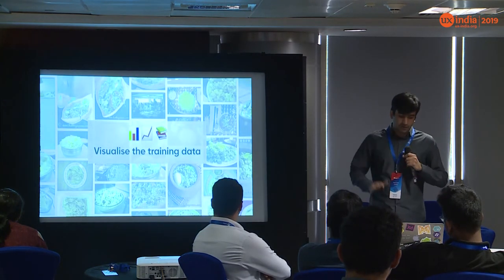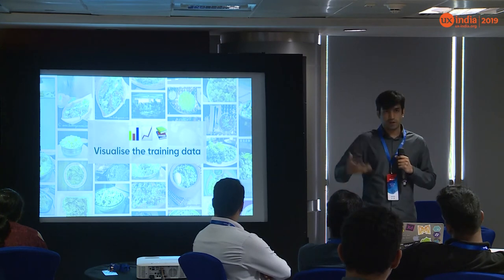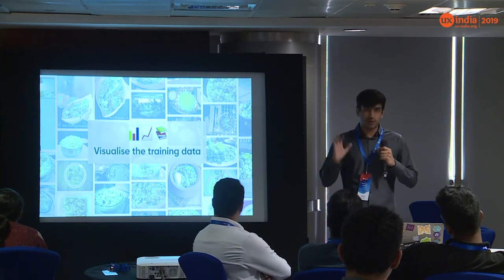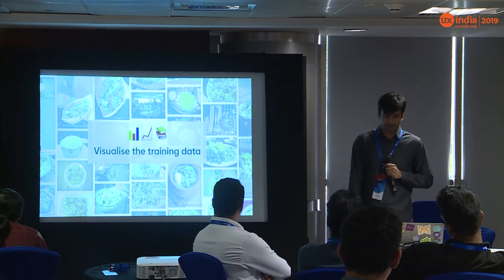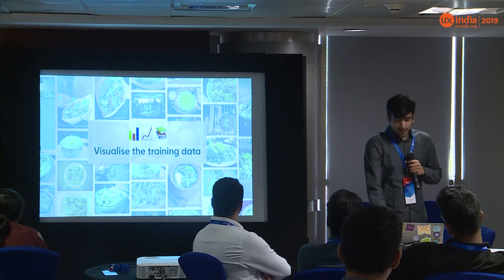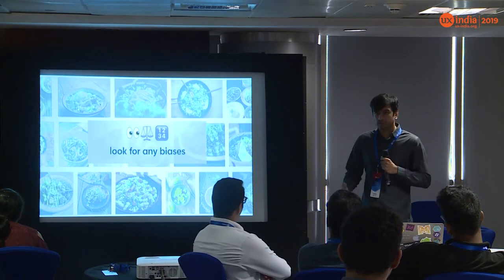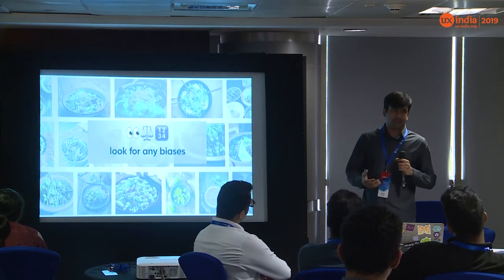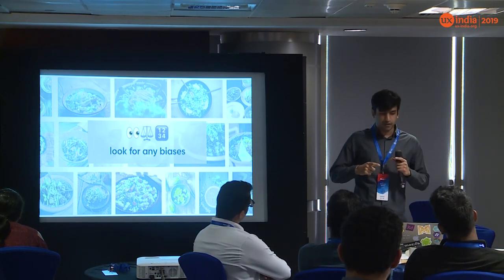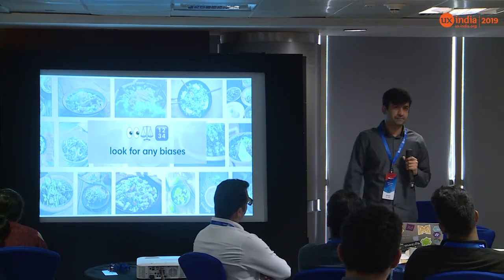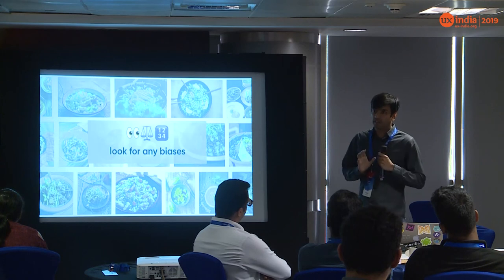The first thing you can try is to visualize the data — scrape all those images, put them on screen, and see what the data is telling you. You're looking for any biases. As a food blogger might know, people usually take pictures of food from the top, so your data might be inclining towards that.